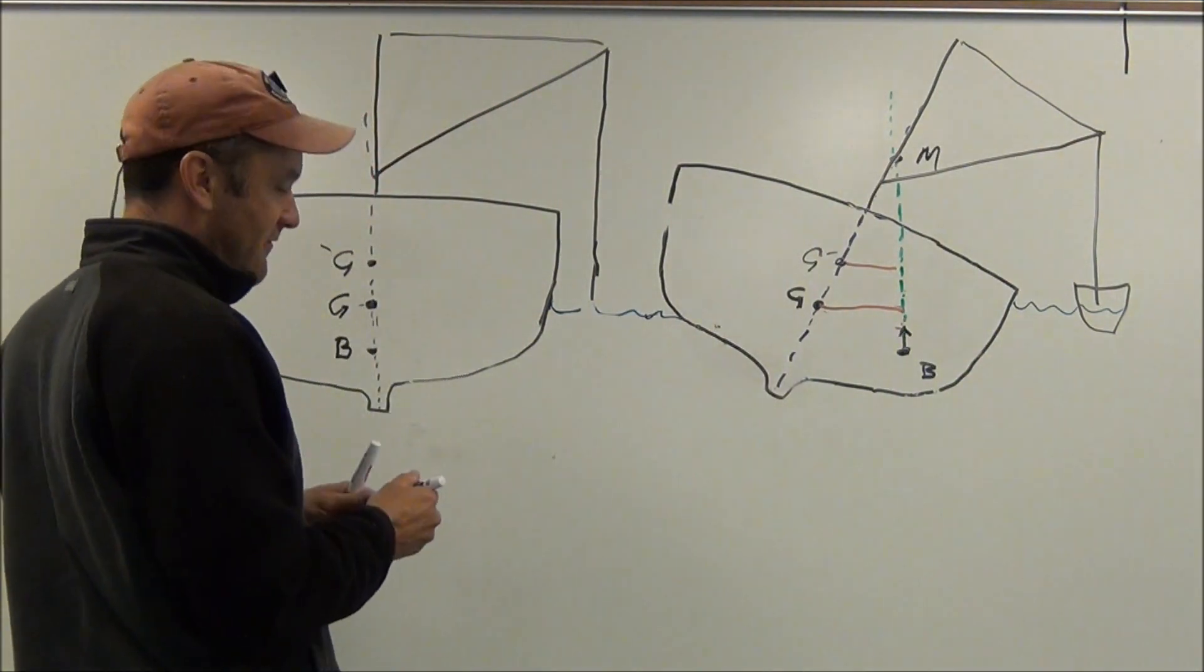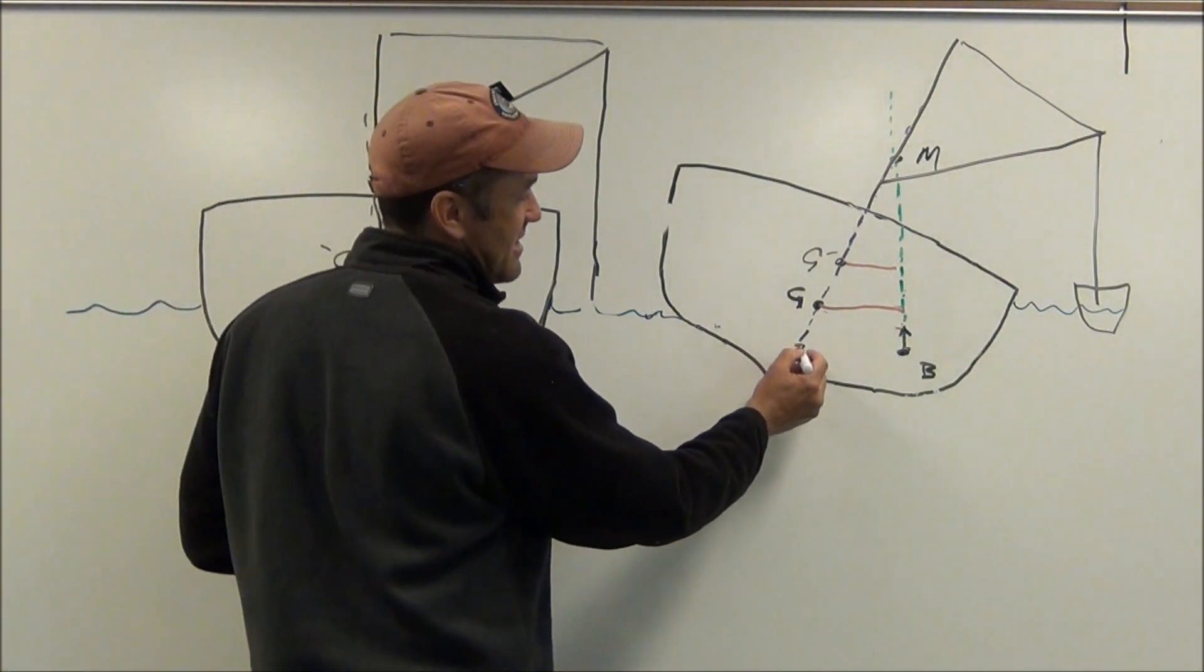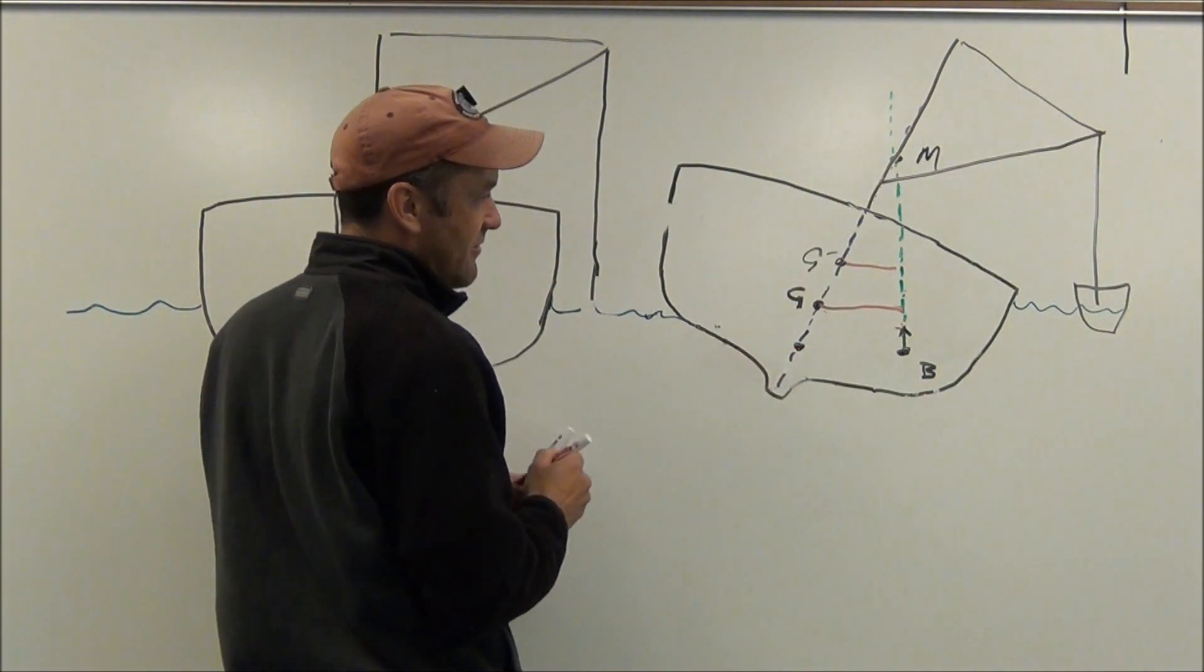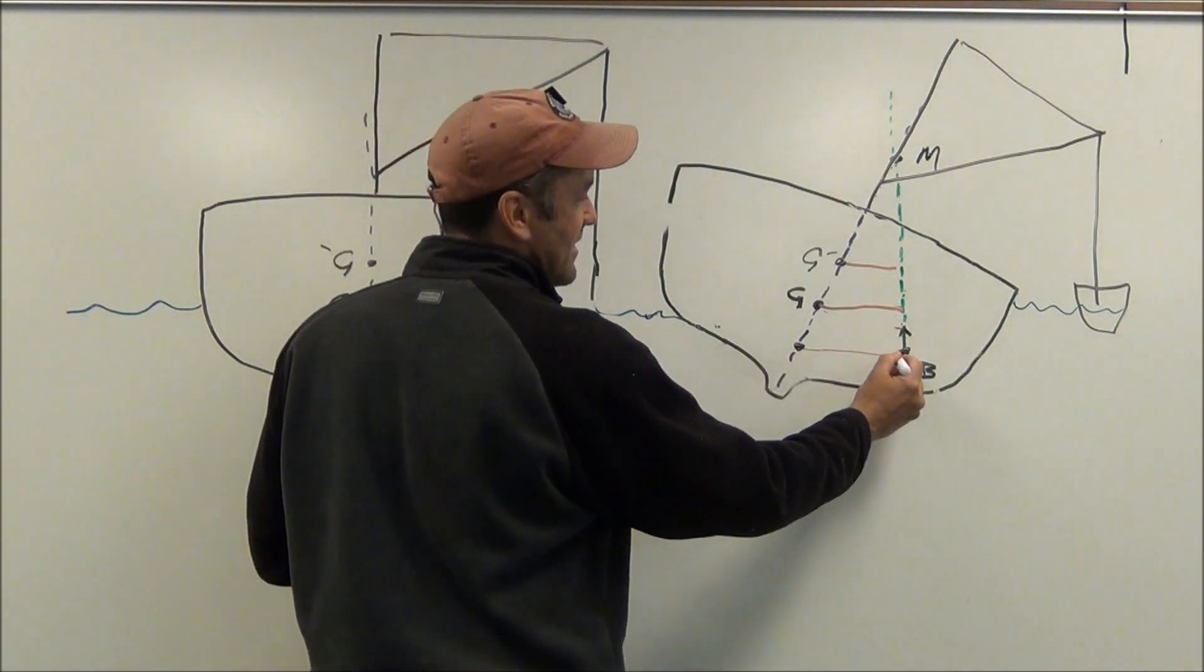So now, of course, if I lower the center of gravity down to here, you can see how that increases the length of the righting arm.